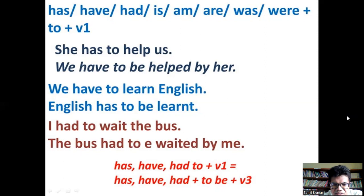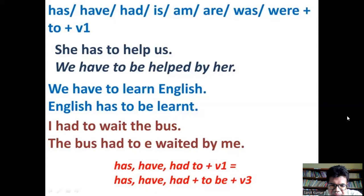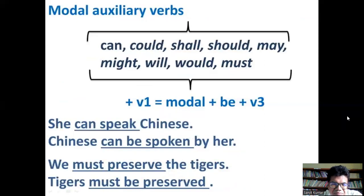'I had to wait for the bus' → 'The bus had to be waited for by me.' Now, modal auxiliary verbs: can, could, shall, should, may, might, will, would, must — these are the modal auxiliary verbs. The difference is that whenever we have a modal auxiliary verb in front of any main verb, the main verb remains unchanged — it doesn't change.